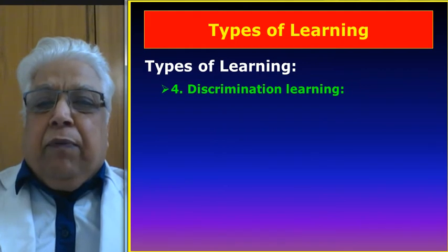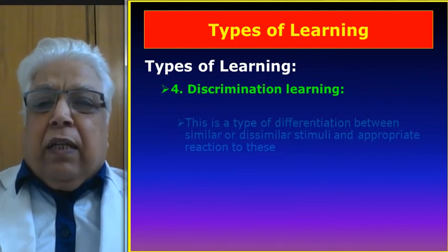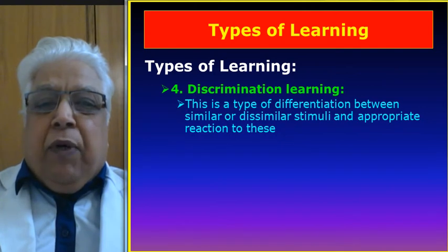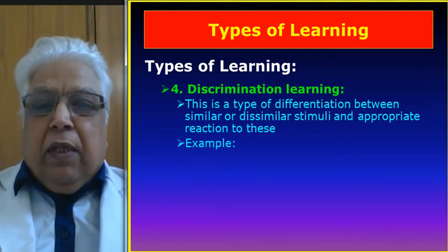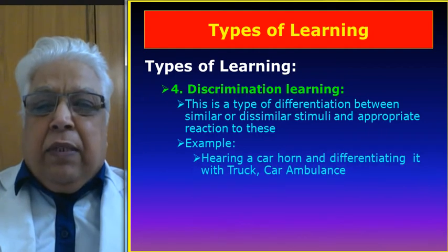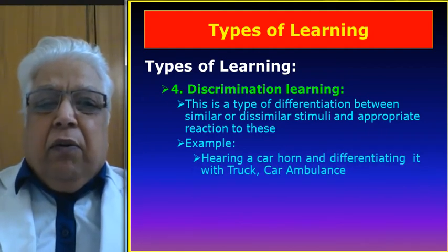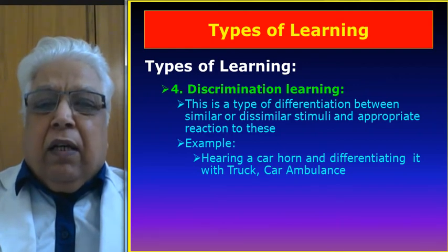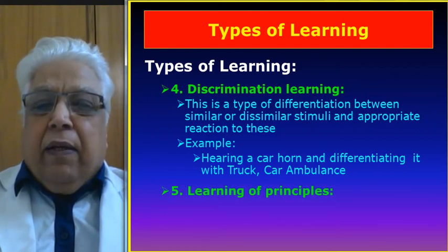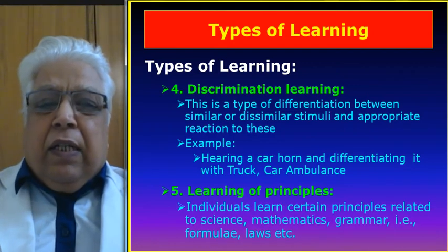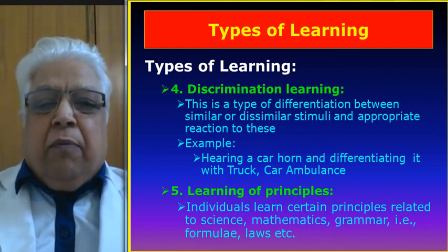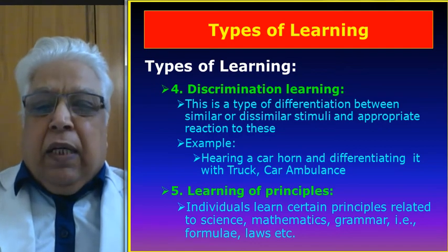The fourth type of learning is discrimination learning. In this type, differentiation occurs between similar or dissimilar stimuli and appropriate reactions to these. For example, hearing a car horn, we can differentiate it from a truck, car, and ambulance. Fifth is learning of principles — individuals learn certain principles related to science, mathematics, grammar, their formulas and laws, etc.